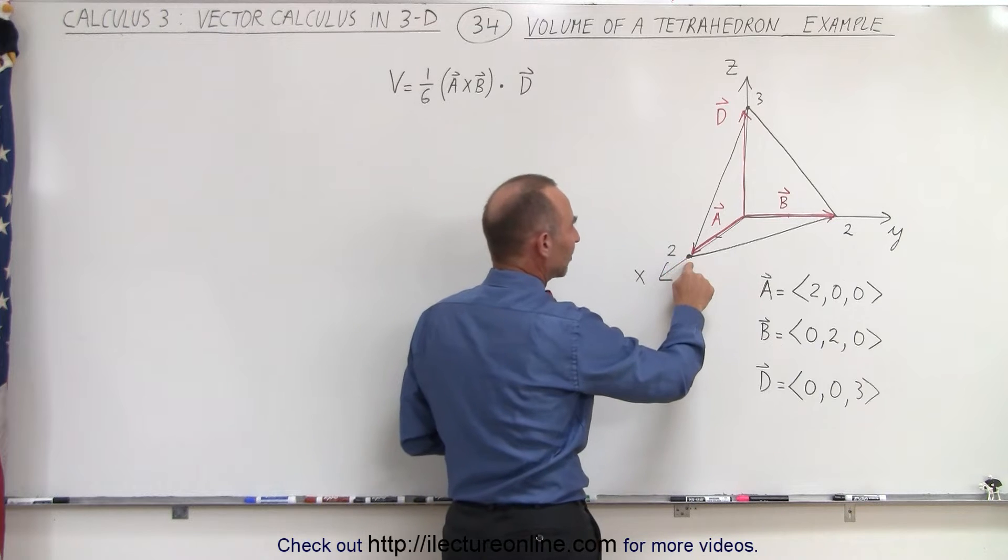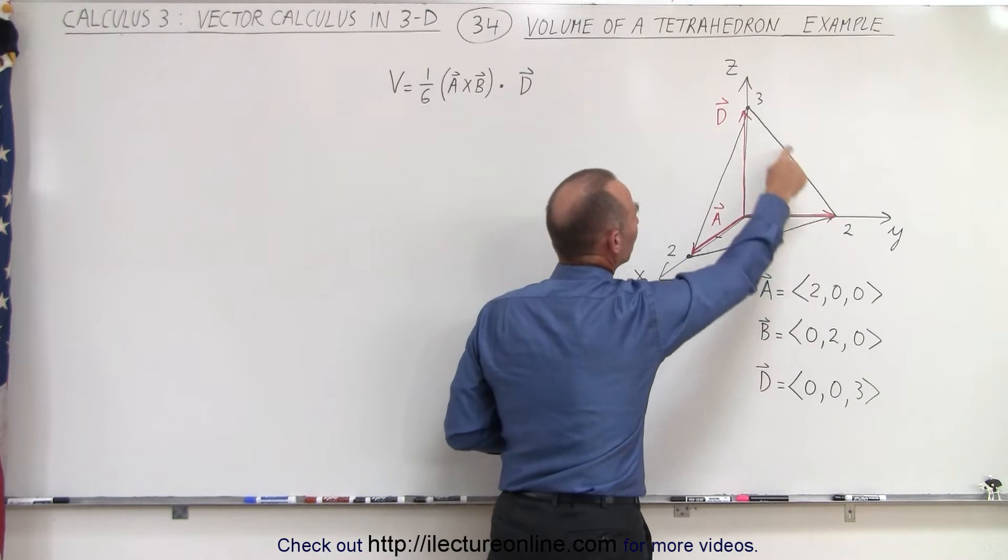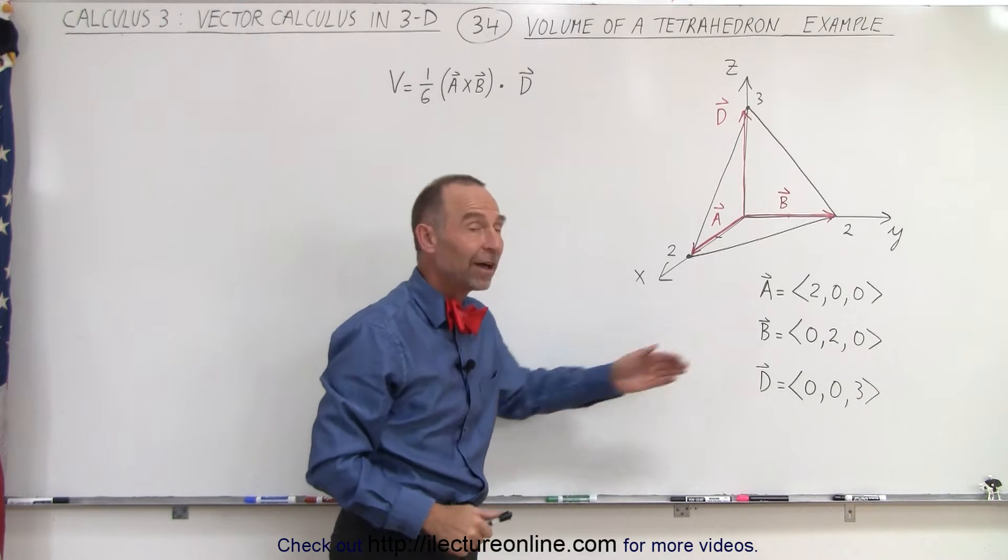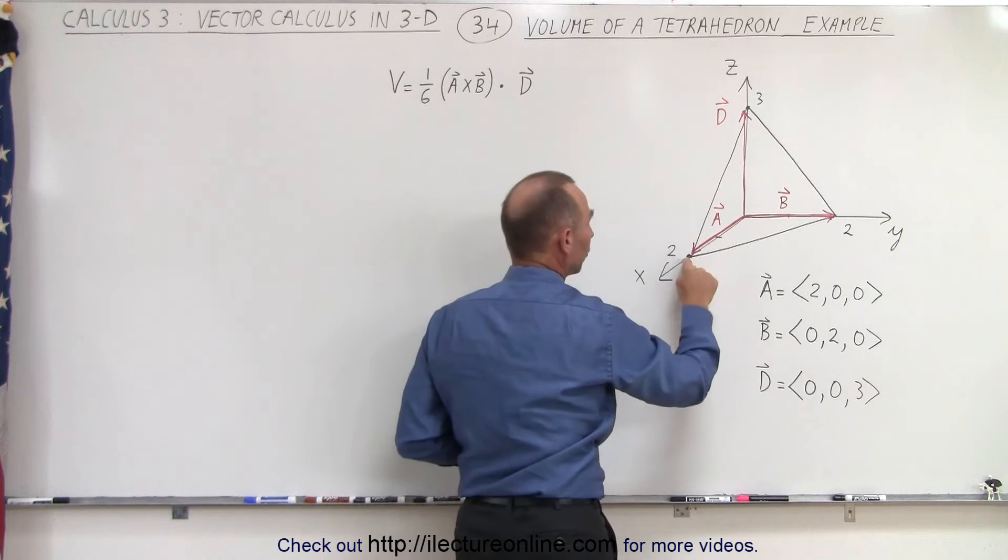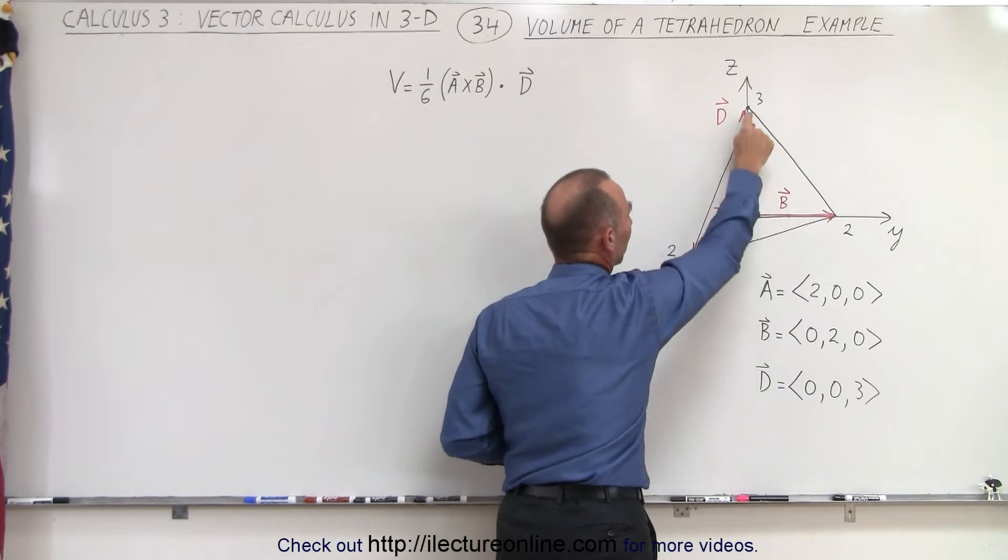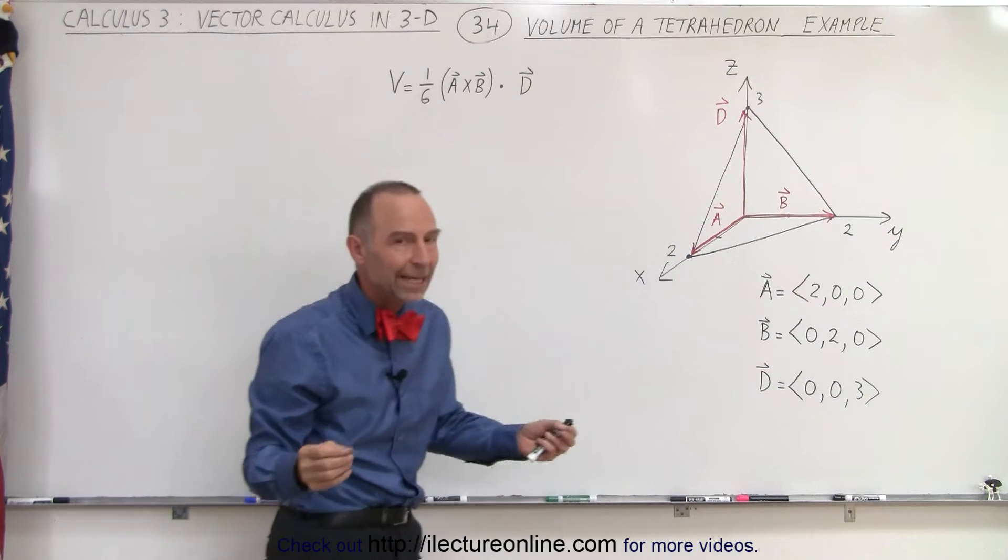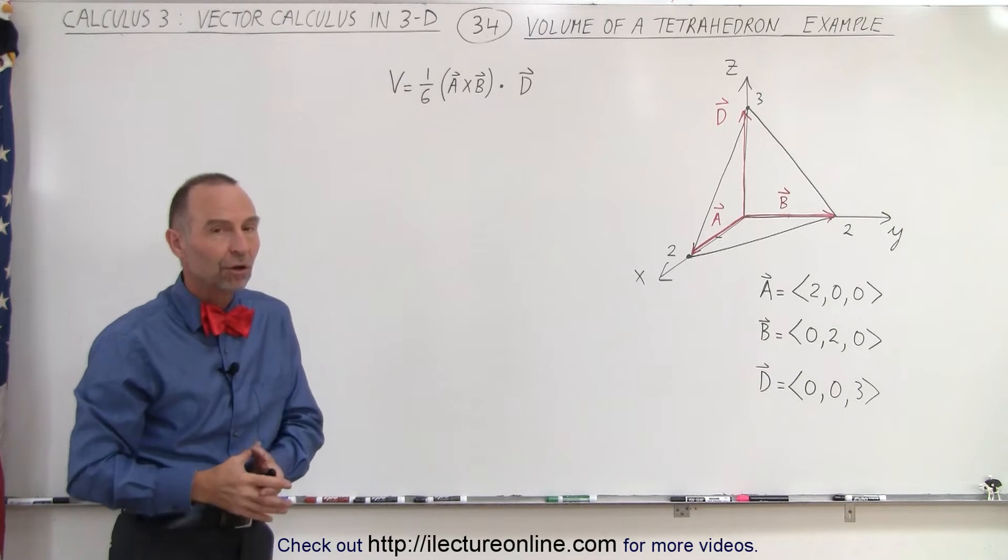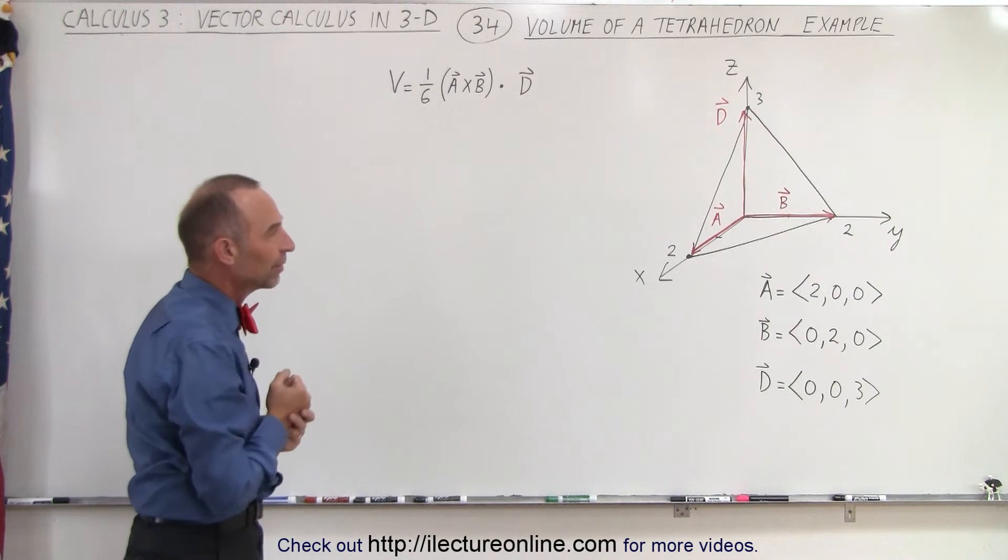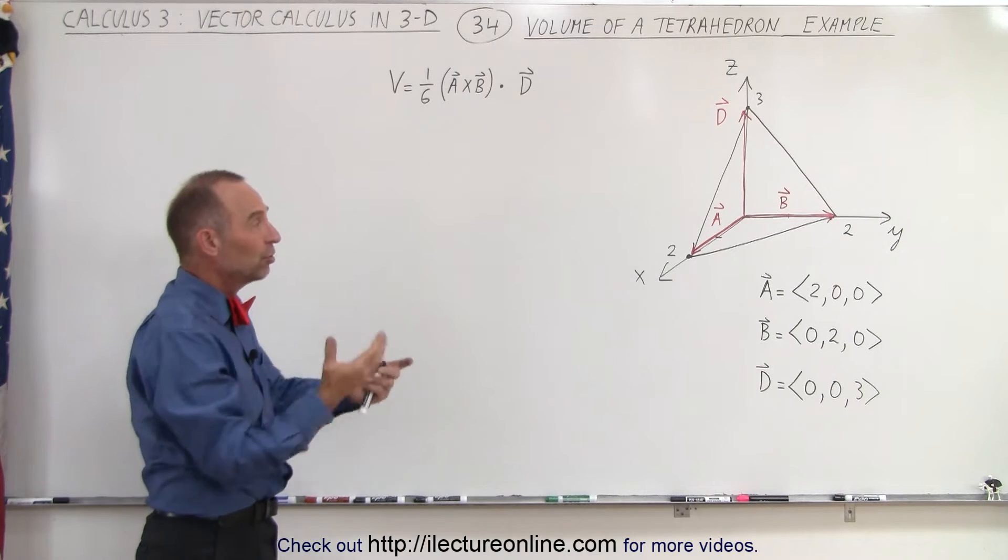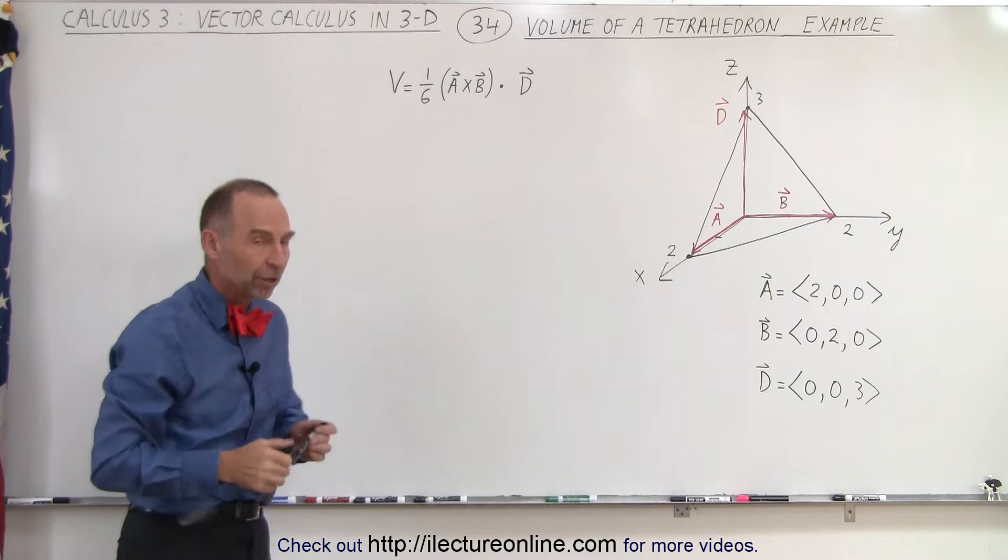Notice that it goes out to x equals 2, y equals 2, and z equals 3. So here are the three vectors defined from the origin to these three points. All we need is three vectors along three of the sides of the tetrahedron to find the volume, and it doesn't really matter which three vectors or which order we do the operation in.